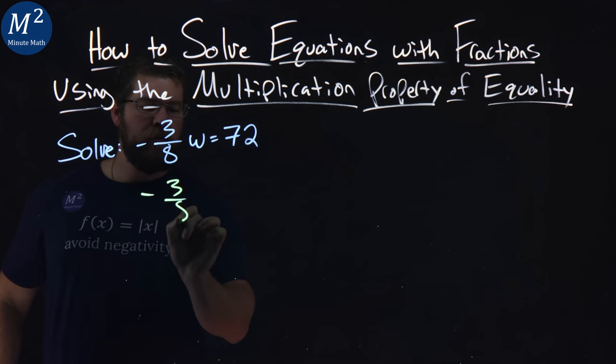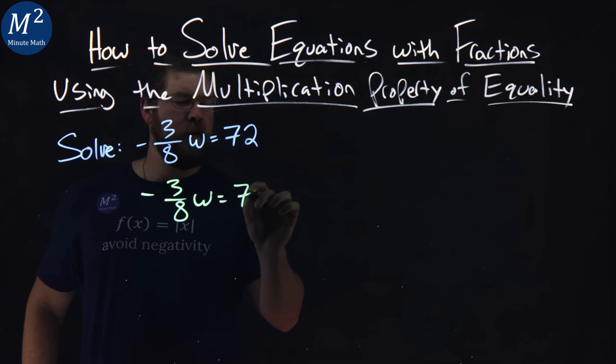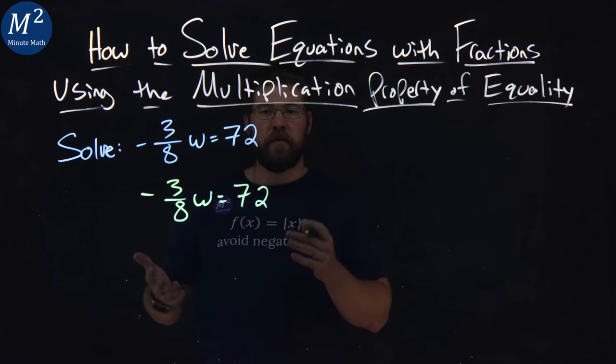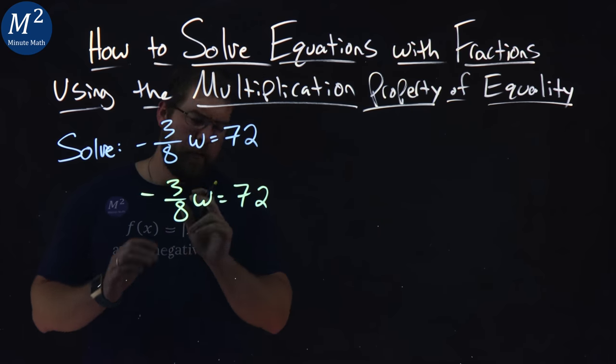So let's go rewrite this, negative 3 eighths w equals 72. The trick here is finding what number to multiply. Our goal is to get w by itself.